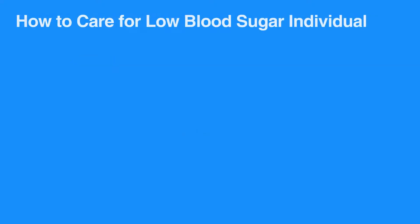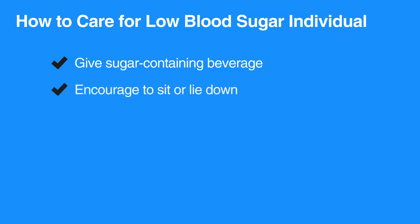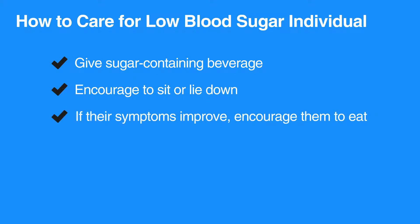To care for an individual who has low blood sugar, give them a sugar-containing beverage such as fruit juice, milk, or a soft drink. Encourage them to sit or lie down. If their symptoms improve, encourage them to eat. Also, be sure to call 911.